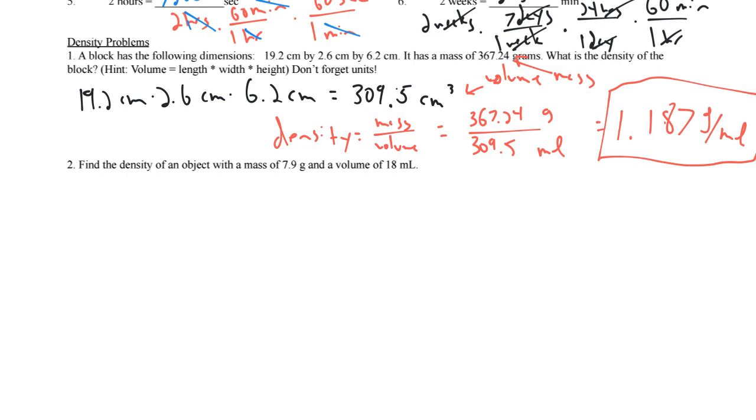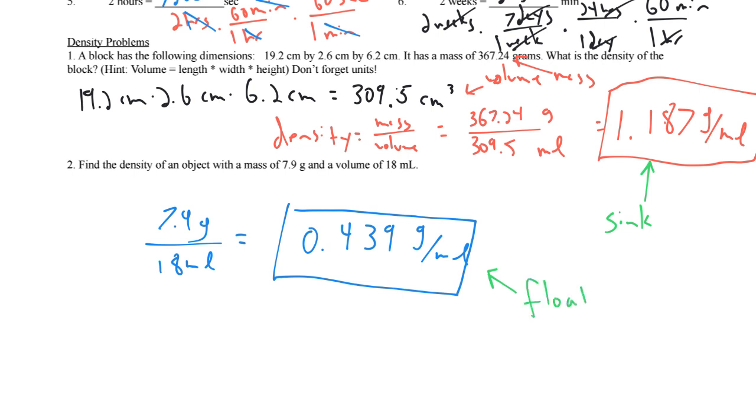Cubic centimeters can become milliliters. They are equivalent. So 367.24 divided by 309.5 is 1.187 grams per milliliter. Now find the density of an object. This one just gives us the mass and the volume. So 7.9 grams divided by 18 milliliters equals 0.439 grams per milliliter. An interesting thing to note is that this first one is more dense than water, so it would sink in water. This next sample is less dense than water, so it would float on water. Water has a density of one gram per milliliter.